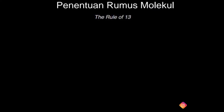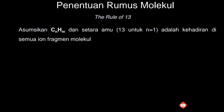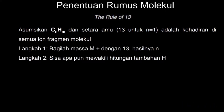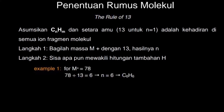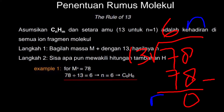Penentuan rumus molekul dengan rule of 13: asumsikan C, H, dan AMU setara 13 untuk N sama dengan 1 hadir di semua ion fragmen molekul. Langkah pertama: bagi massa molekul M+ dengan 13, hasilnya adalah N. Langkah kedua: sisa apapun mewakili hitungan tambahan H. Contoh pertama, molekul induknya massa molekulnya 78. 78 dibagi 13 sama dengan 6, tidak ada sisa atau R sama dengan 0. Berarti langsung saja C6H6.